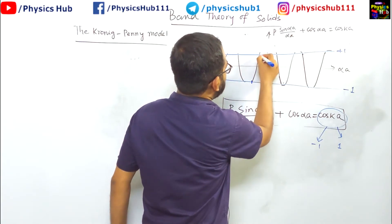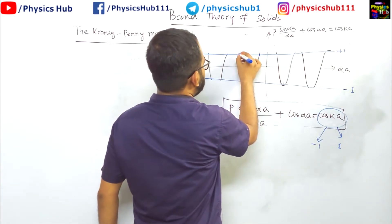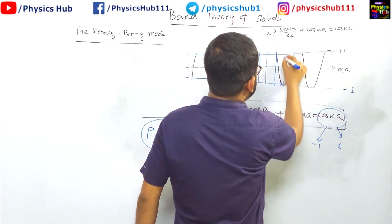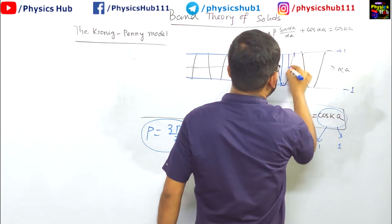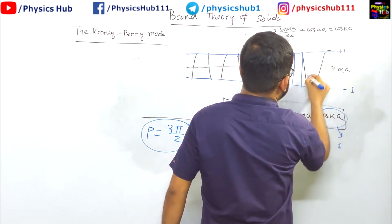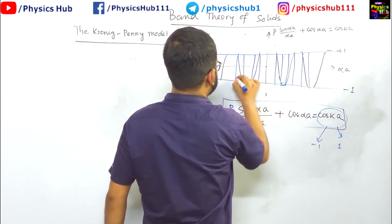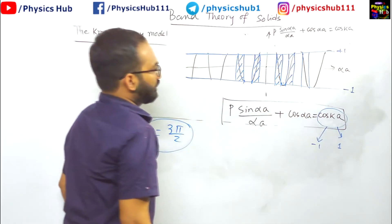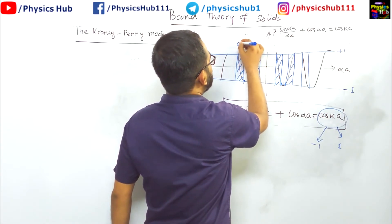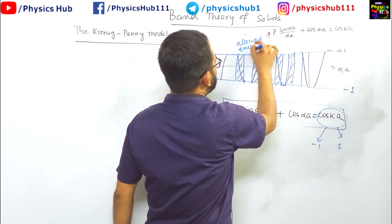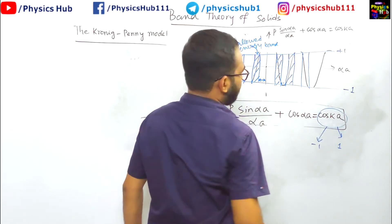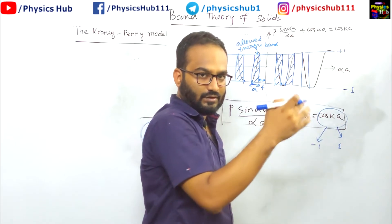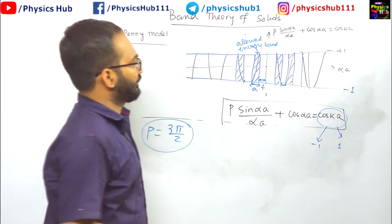You can see from this point to this point we'll have the allowed band, from this point to this point. So these are the allowed points, and beyond this - I hope you are understanding what is happening. Only these are the region where the solution is allowed. These are the allowed energy bands. And consequently, this will be a forbidden energy region. This is A for allowed, F for forbidden, allowed, forbidden, allowed, forbidden. So we are getting some consecutive allowed and forbidden region.